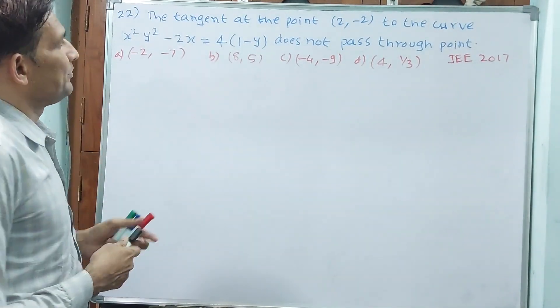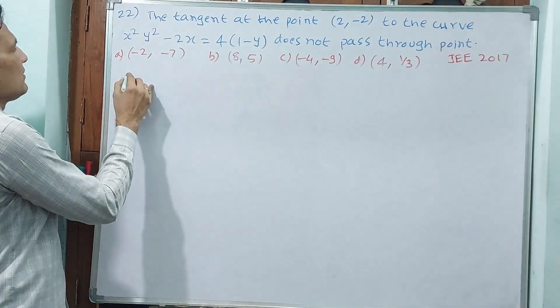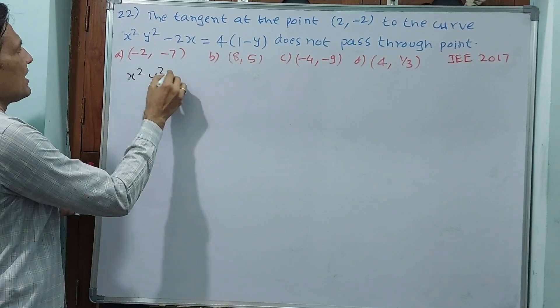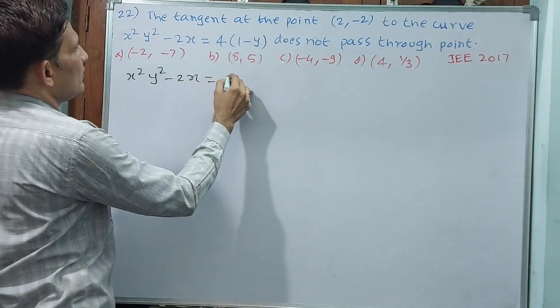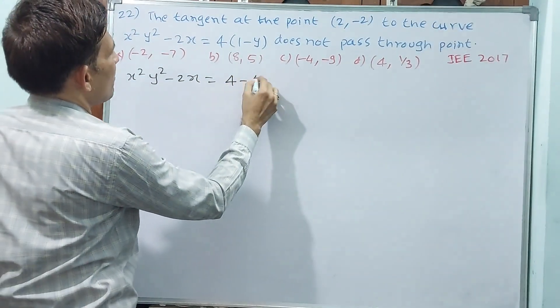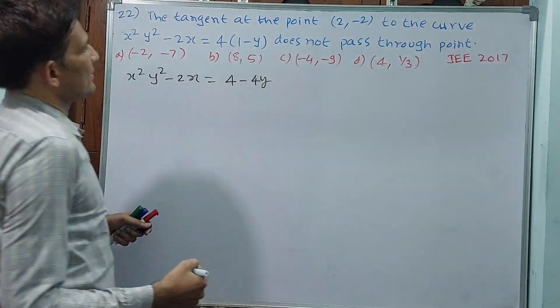First of all, differentiate this. Let me write this equation. What is that I have to do? x²y² - 2x = 4 - 4y. Separate like this.